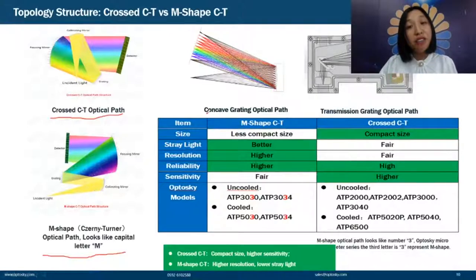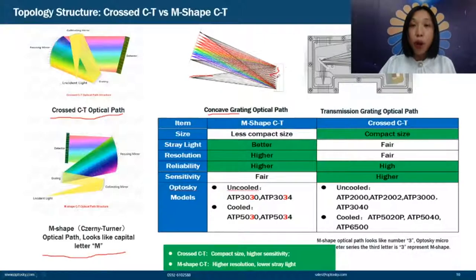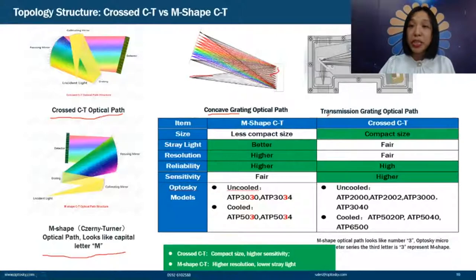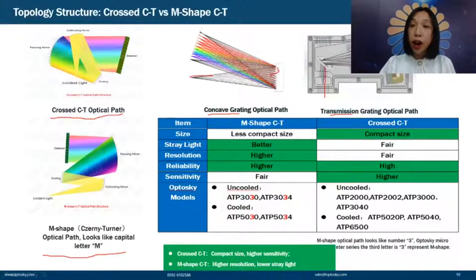We also have the concave grating optical path — a very simple design where the grating both disperses and focuses the light. The transmission grating optical path has light passing through the grating, which disperses the parallel beams. These then turn to hit the focusing mirror, which directs the dispersed light to the detector to transform optical signals into electrical signals.